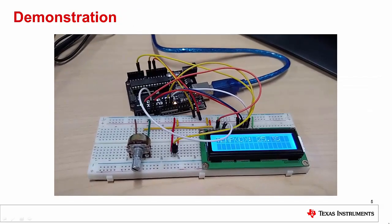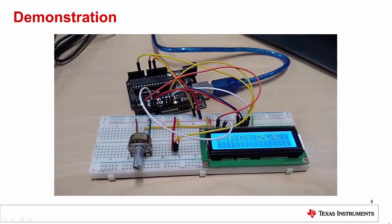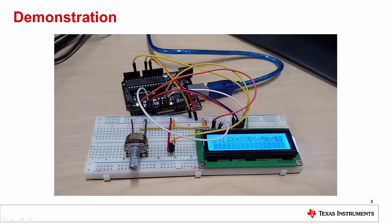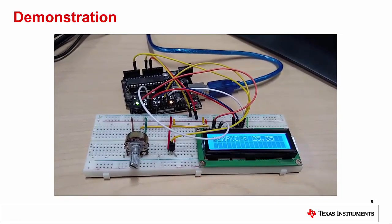Here we have an Arduino Uno configured to read from the LM35 and output the measured temperature to a generic 1602 LCD display. From left to right in the first row, we have a 50K potentiometer, the LM35, and the LCD.